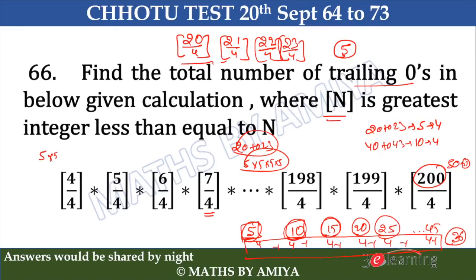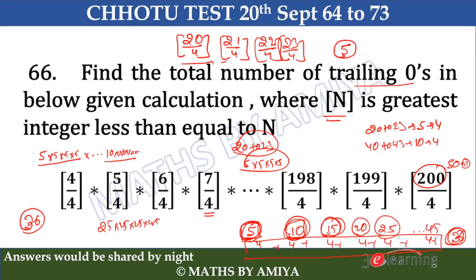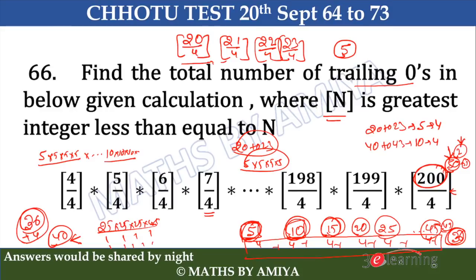We calculated up to 45–49. But the number 50 has 2 extra fives — that is 200 divided by 4. So we have 40 plus 2, giving a total of 42 trailing zeros in this series. Since we have plenty of 2s, the answer to question 66 is nothing but 42.